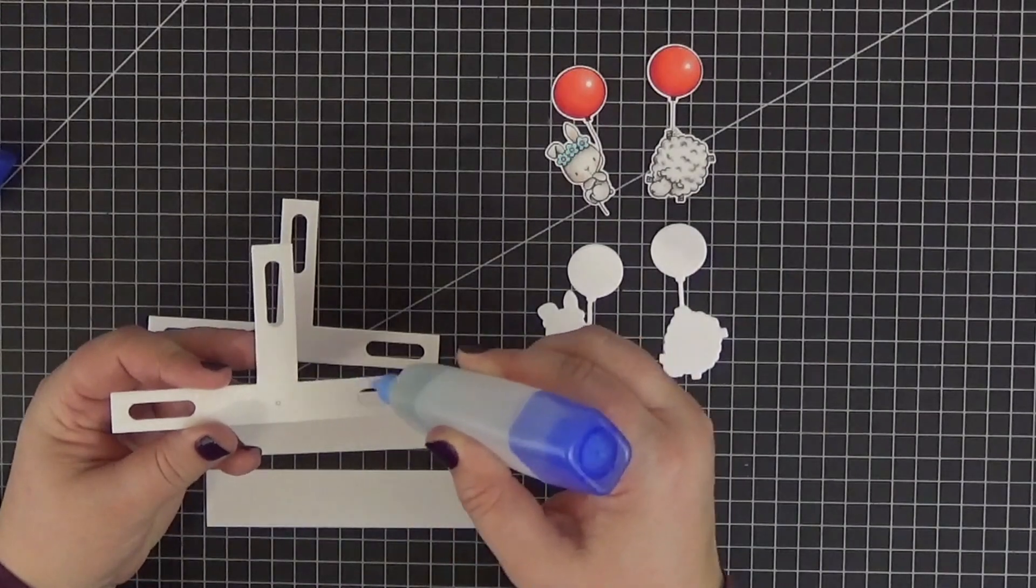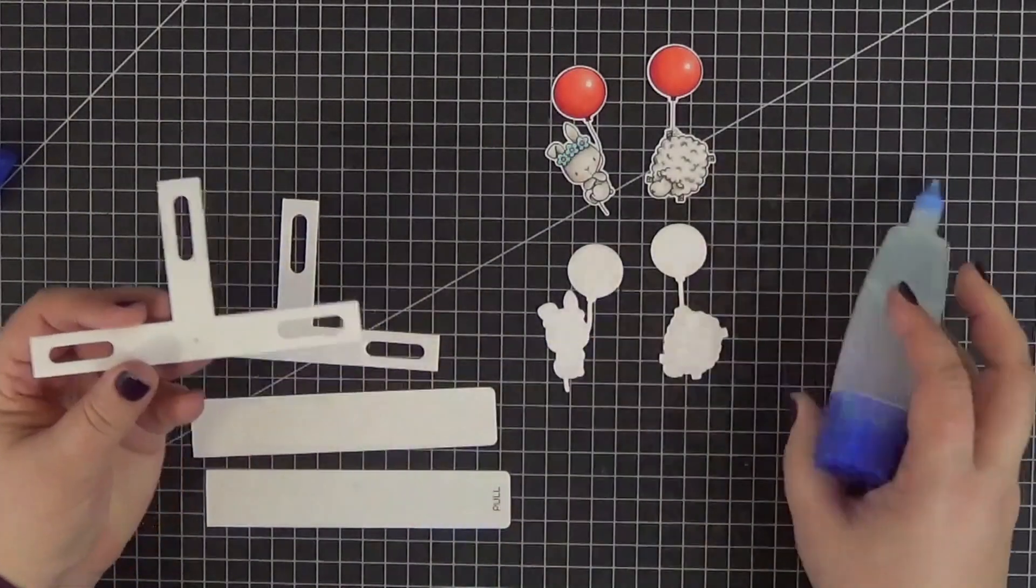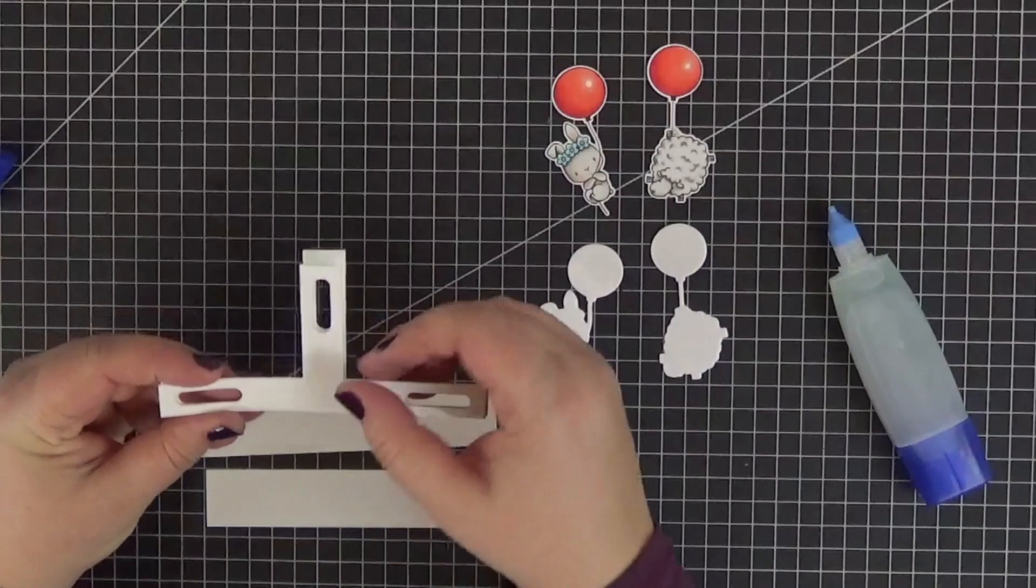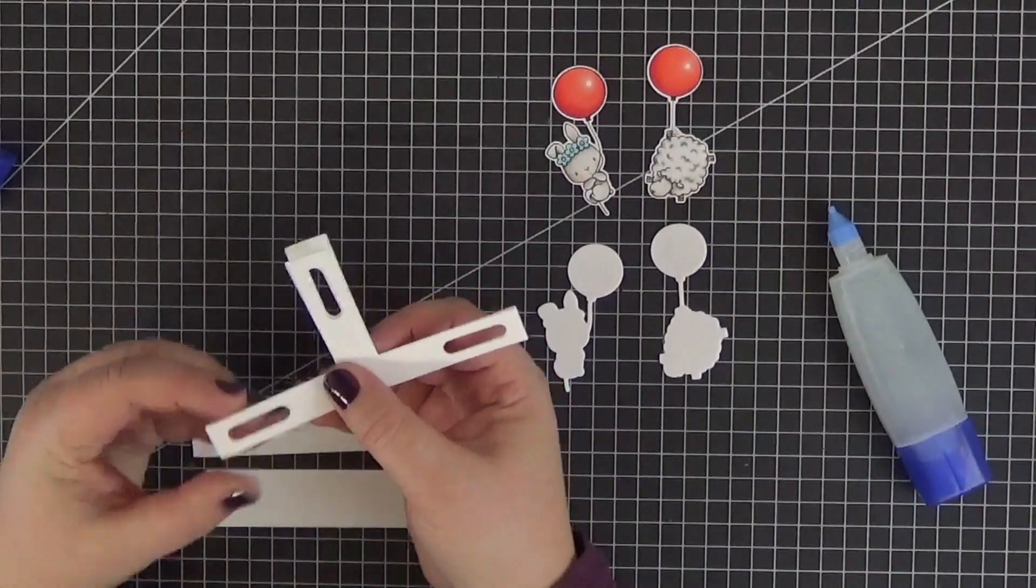We can stack them with some matte liquid glue. I'm doing the same with the critters since those balloon strings are quite delicate.